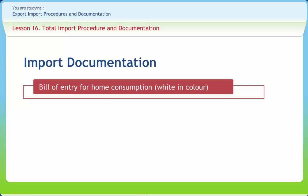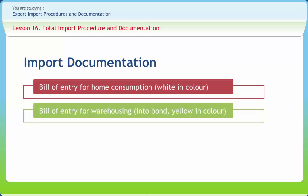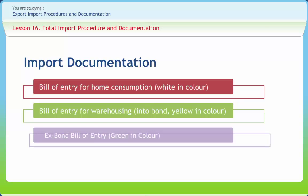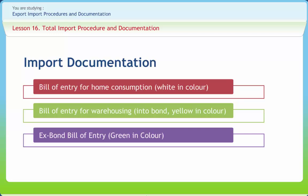First, Bill of Entry for Home Consumption — where an importer wants to get his goods cleared in one lot, he presents the Bill of Entry for Home Consumption. Second, Bill of Entry for Warehousing — where an importer wants to shift goods to a warehouse and thereafter get goods cleared in small lots, he presents an Into Bond Bill of Entry. The reason may be inability to pay duty on all goods at once, or storage problems. Third, Ex-Bond Bill of Entry — when an importer wants to remove goods from the warehouse, he presents an Ex-Bond Bill of Entry, which is green in color.